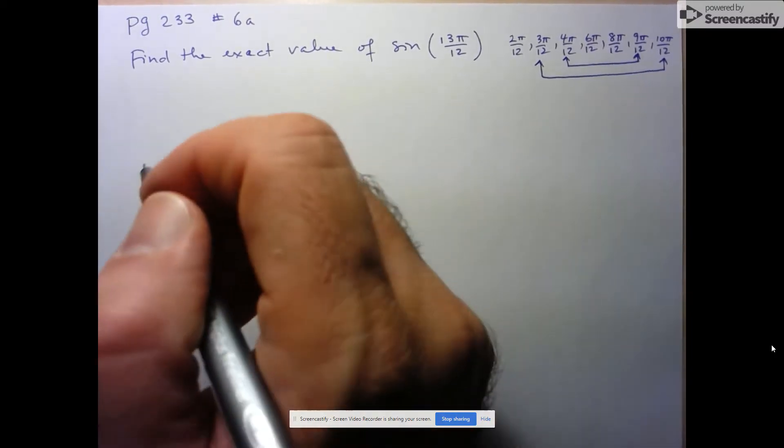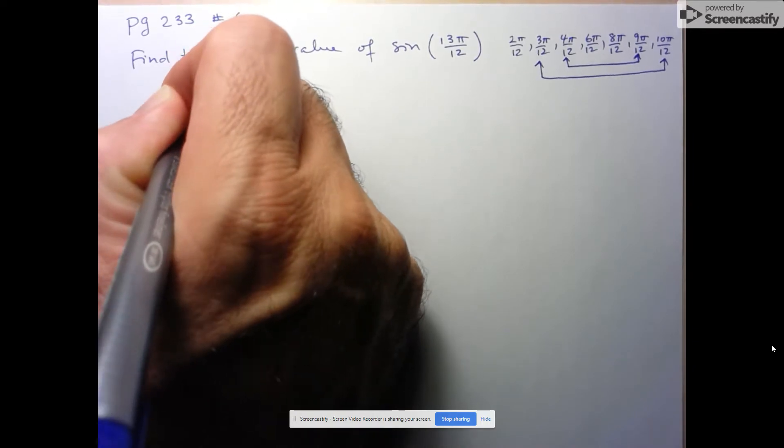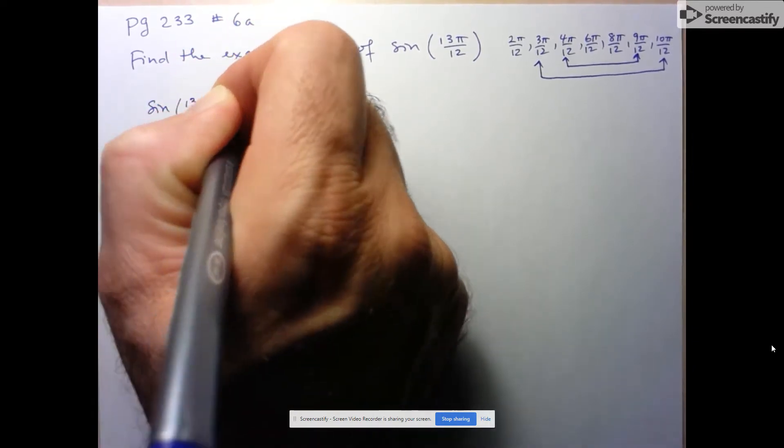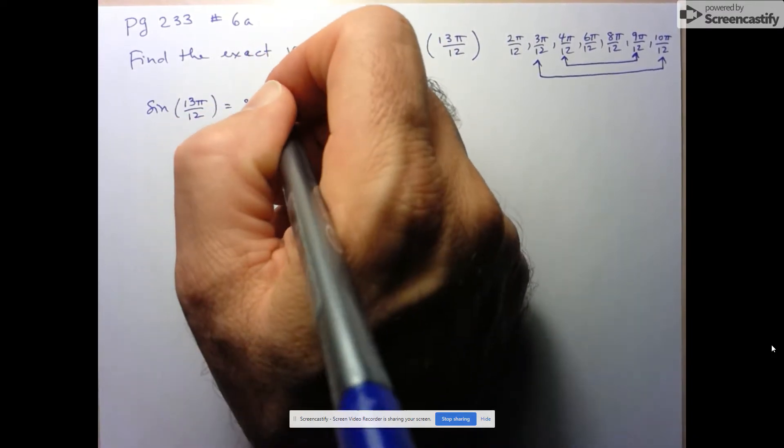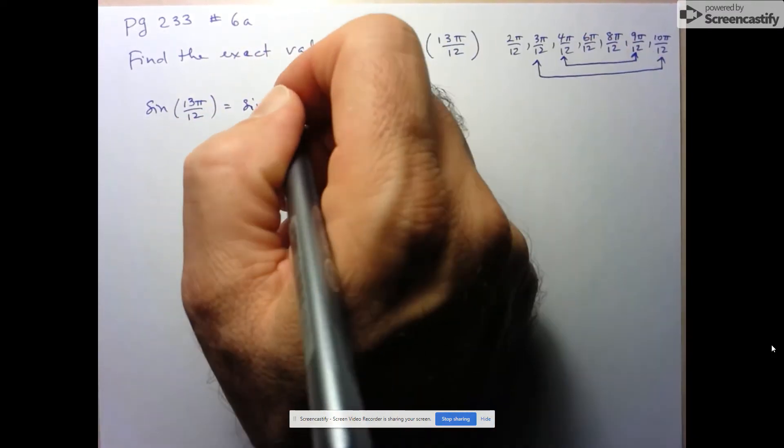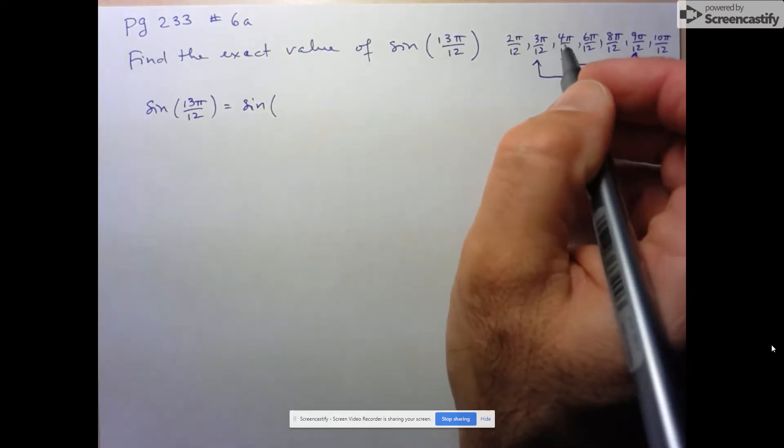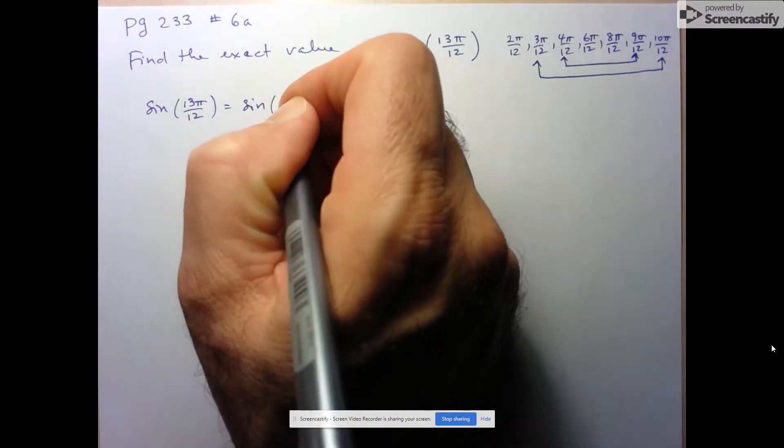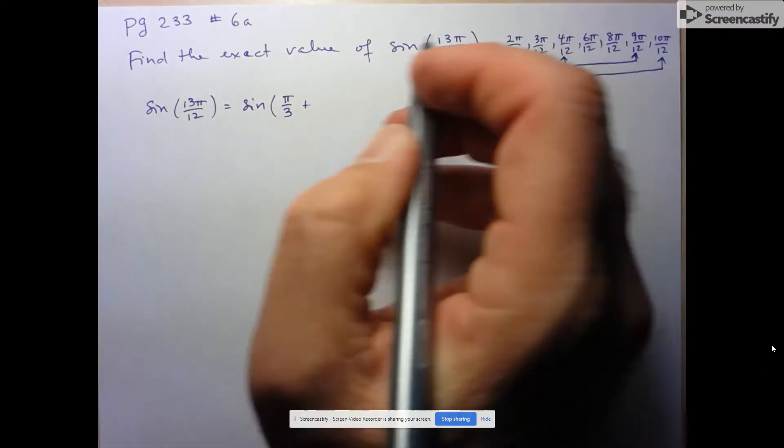I'm going to take sine of 13π over 12 and just rewrite it. Notice here I'm not actually changing the value, I'm just changing the form. I'm going to rewrite that as 4π over 12 plus 9π over 12. In other words, π over 3 plus 3π over 4.